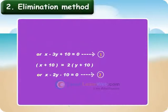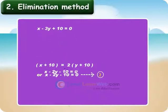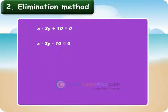Now children, let us solve these two equations with the help of elimination method. X-3Y plus 10 is equal to 0. X-2Y minus 10 is equal to 0. Step 1: Children, our first step should be to make the coefficients of Y equal.